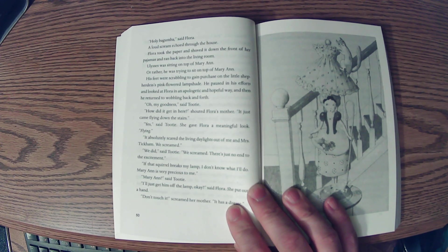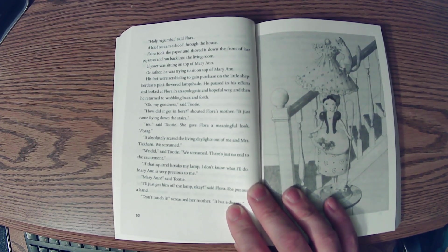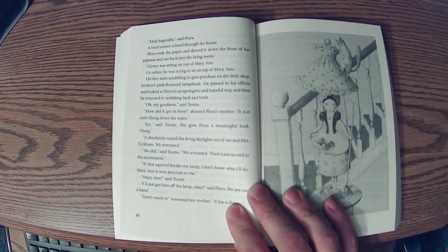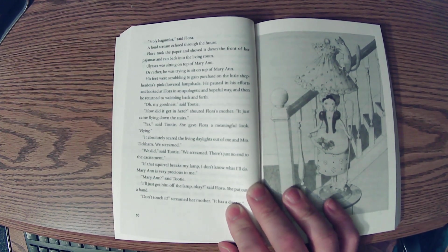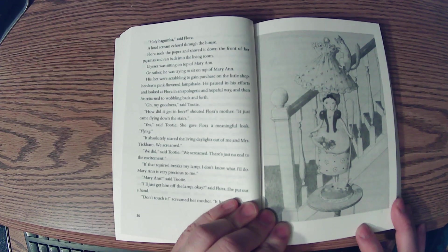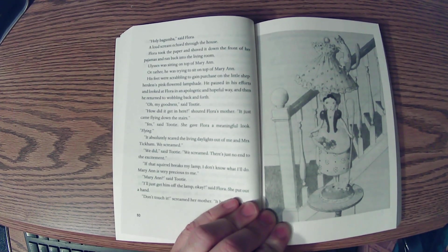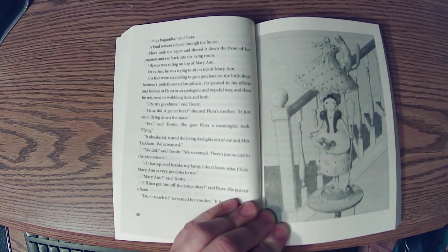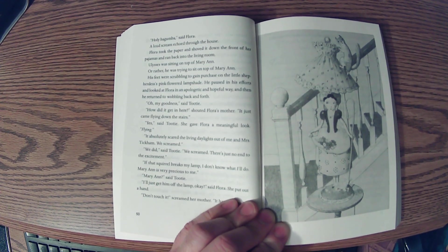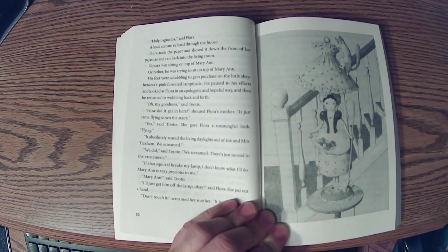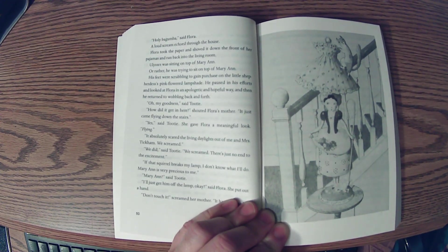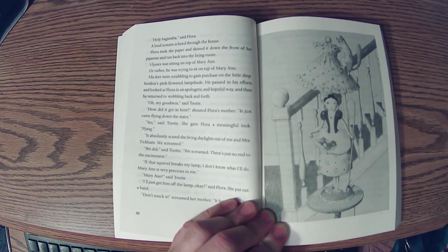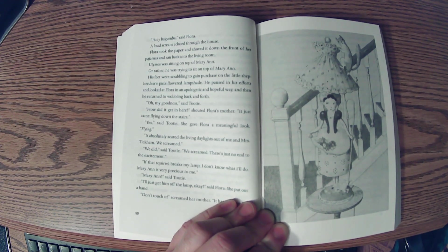A loud scream echoed through the house. Flora took the paper and shoved it down the front of her pajamas and ran back into the living room. Ulysses was sitting on top of Mary Ann. Or rather, he was trying to sit on top of Mary Ann. His feet were scrabbling to gain purchase on the little shepherdess's pink-flowered lampshade. He paused in his efforts and looked at Flora in an apologetic and hopeful way. And then he returned to the wobbling back and forth. Oh my goodness, said Tootie. How did it get in here? shouted Flora's mother. It just came flying down the stairs. Yes, said Tootie. She gave Flora a meaningful look. Flying! It absolutely scared the living daylights out of me and Mrs. Tickham. We screamed. We did, said Tootie. We screamed.